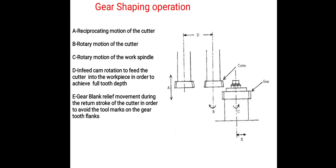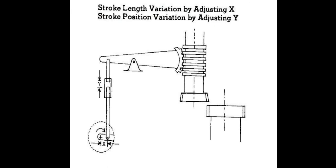Next is the gear shaping operation. It involves: a reciprocating motion of the cutter, rotary motion of the cutter, rotary motion of the work spindle, in-feed cam rotation to feed the cutter into the workpiece to achieve full tooth depth, and relief movement during the return stroke of the cutter to avoid tool marks on the gear tooth flanks. Stroke length is varied by adjusting the X and Y directions.